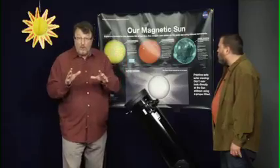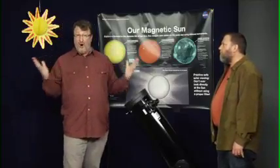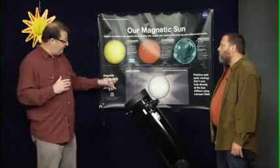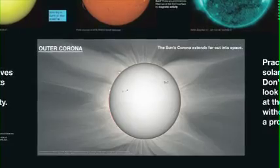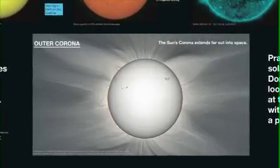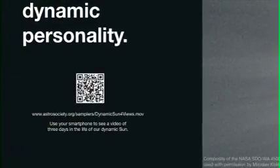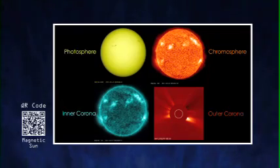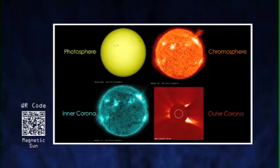That corona, or solar atmosphere, actually extends far out into space, as you can see from this image on the bottom. It even extends all the way to Earth and beyond. This code links to a video of these images over three days, so you can see how the sun changes over time.